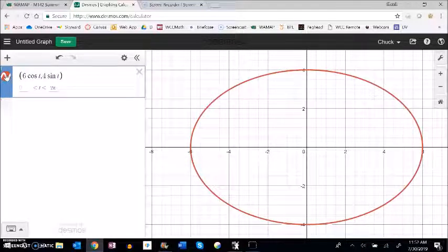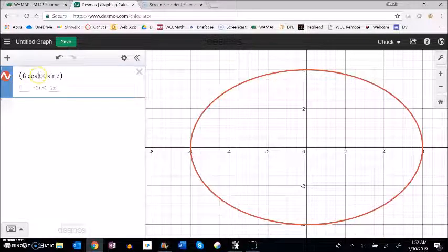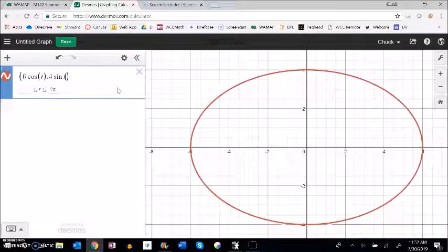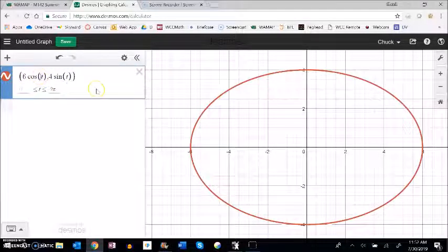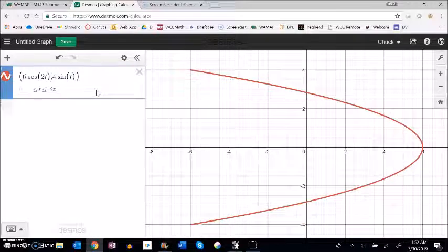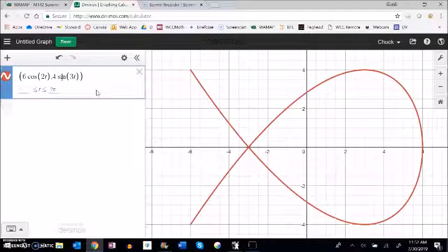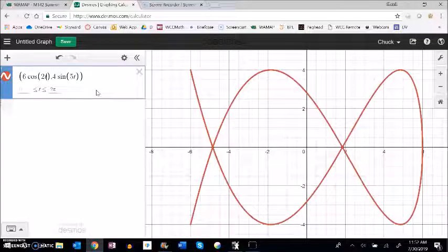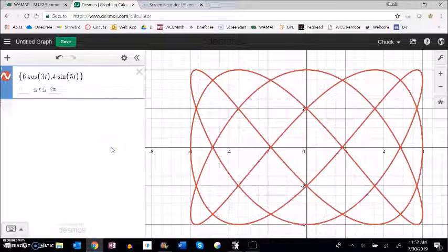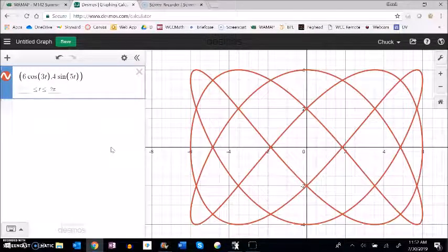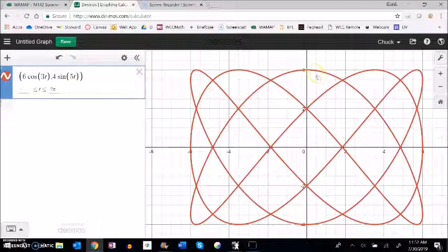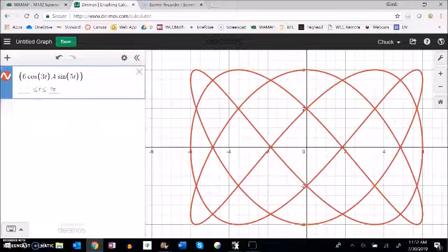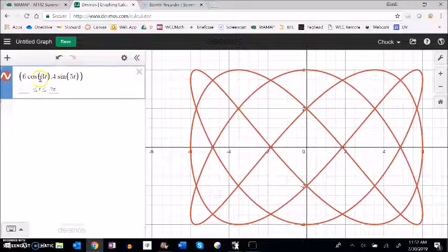What I'm going to do is get in here and change the periods on these. I'm going to make this maybe go around twice as this goes around three times. Let's make that a 3 and a 5. Wow, look what happens. It just goes crazy. I want you to notice a couple of things here. The 6 and the 4, those still control this outside. This 6 is the width in the x direction. This 4 is giving us this height in the y direction, 4 to -4.